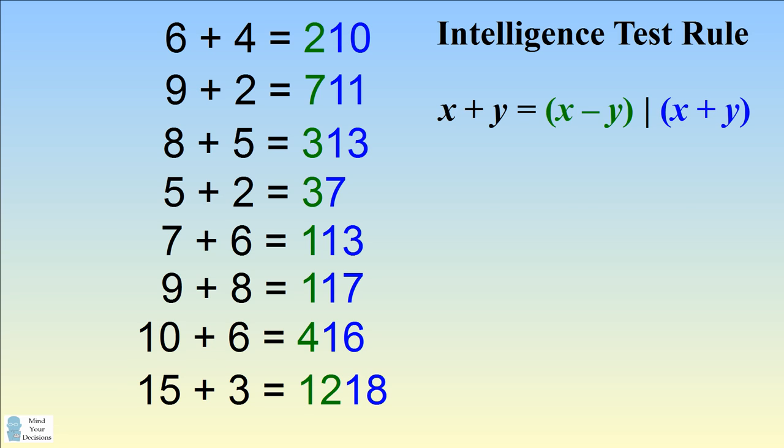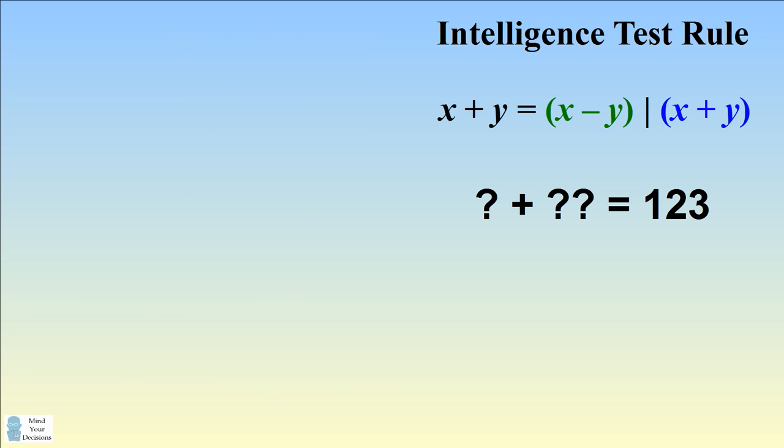So now let's test our knowledge and see if we can solve a new problem. One way we can interpret this problem is that we want two numbers to combine so that the two numbers have a difference of 1 and a sum of 23.